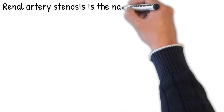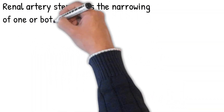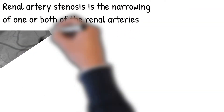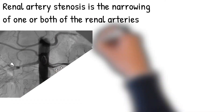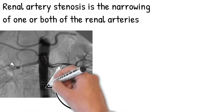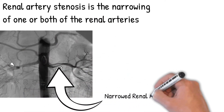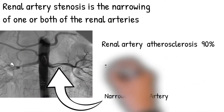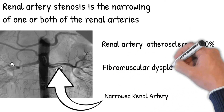Renal artery stenosis is the narrowing of one or both of the renal arteries. In 90% of cases it is caused by atherosclerosis, and in 10% of cases by fibromuscular dysplasia.